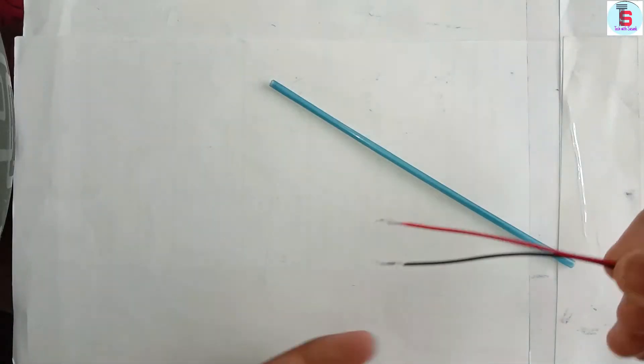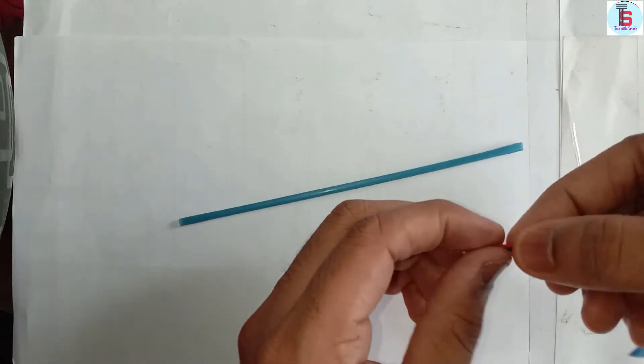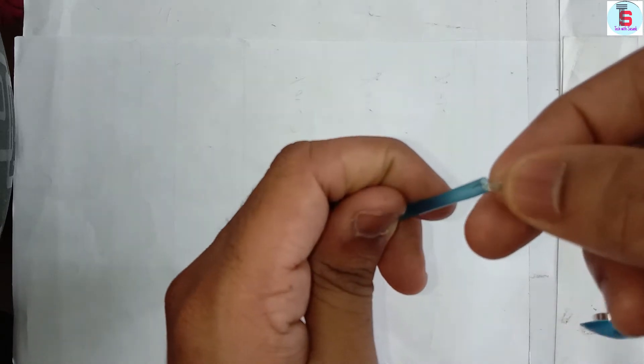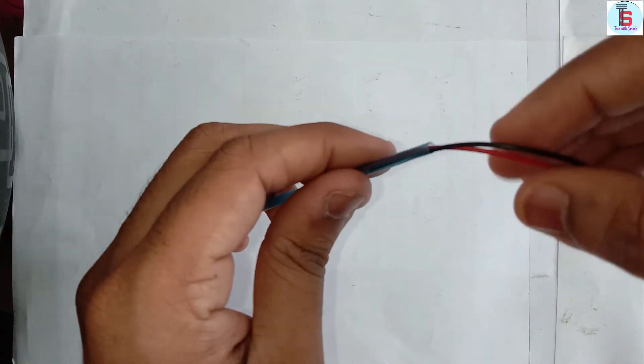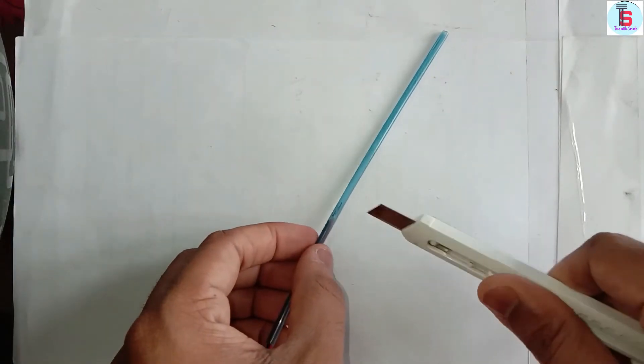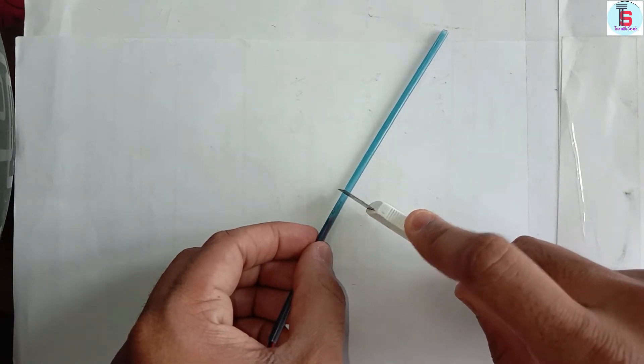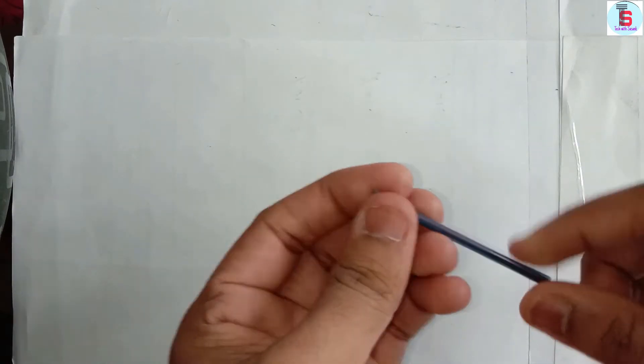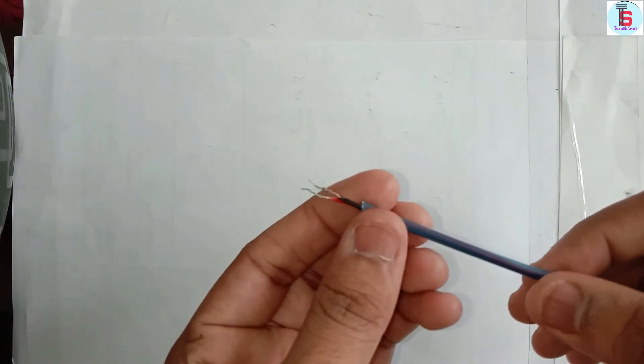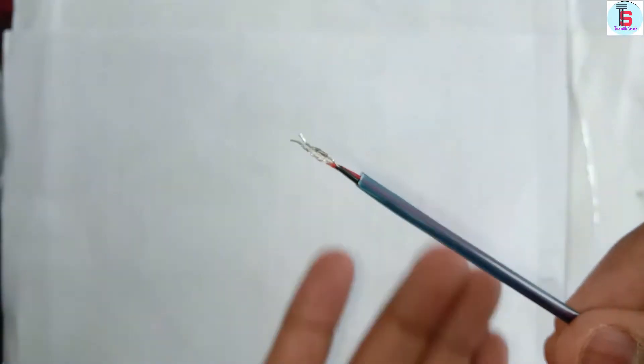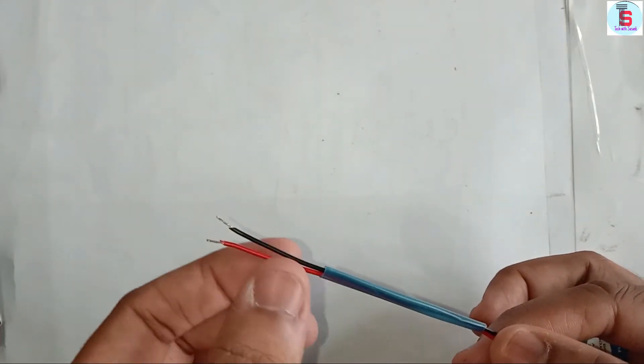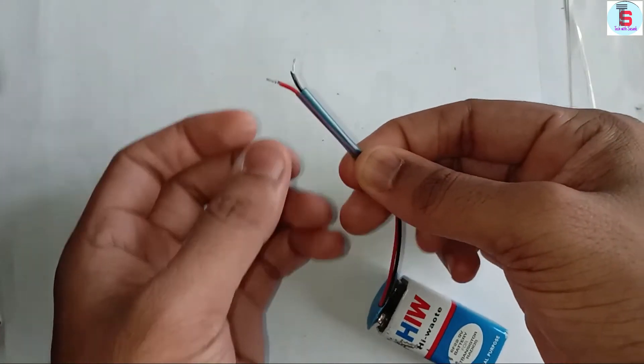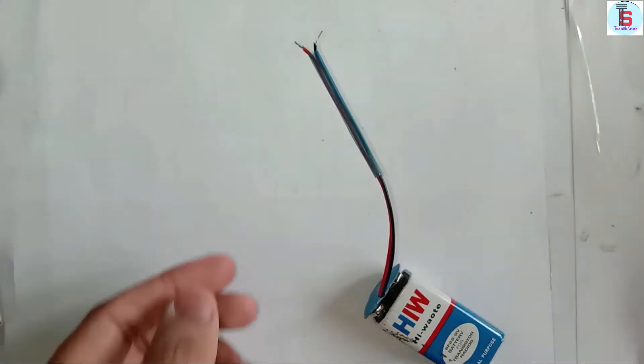First we have to insert the wire in this straw. We have to connect the wires together. We will put the two wires in contact and take a tape.